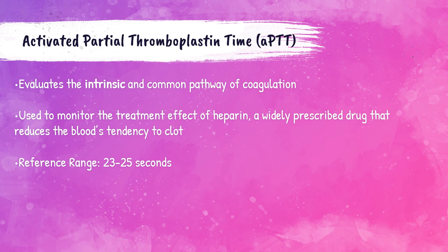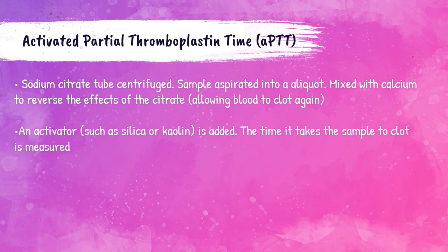The activated partial thromboplastin time, APTT, sometimes called PTT, evaluates the intrinsic and common pathways: factors 12, 11, 9, 8, 10, 5, 2, and 1. This test is used to monitor therapeutic heparin, which prevents a patient's blood from clotting. The normal range for APTT is 23 to 35 seconds. The test is performed by centrifuging the blue top tube, aspirating plasma, mixing with calcium to reverse the citrate, then adding an activator such as silica or kaolin. The time for the sample to clot is measured.